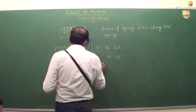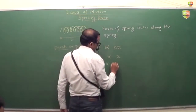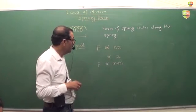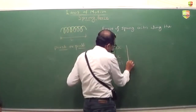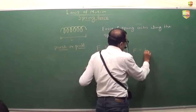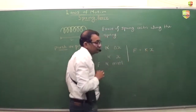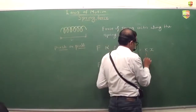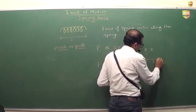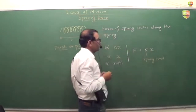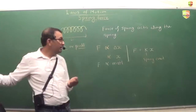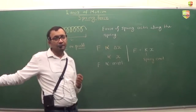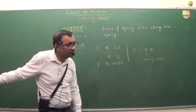The force also depends on the material and various other things — how it is packed and everything else. Combining these two, you get the equation: F is equal to K times X. This is the magnitude of the force. K is called the spring constant. If K is high, it means it is a stiff spring — a very strong spring.